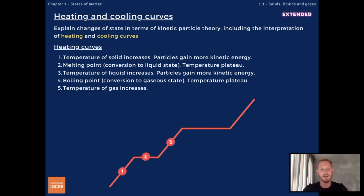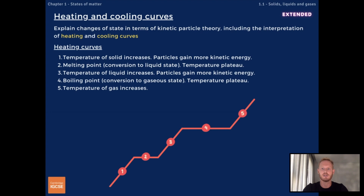Next, the temperature of the liquid increases until it reaches 100 degrees, which is the boiling point of water. At the boiling point we have another plateau, showing that the temperature doesn't increase until all the water has turned into vapor. As soon as all the water is boiled, temperature begins to rise again as particles in the gaseous state gain more energy.